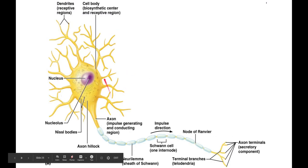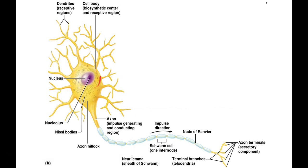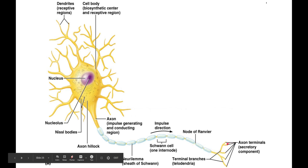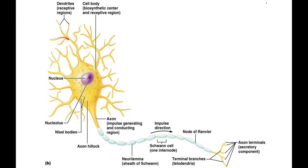Looking at the diagram: here you have the cell body — the perikaryon, also known as the soma — surrounding the nucleus. You have dendrites that branch off in a tree-like pattern. Then there's a single axon coming down from the axon hillock. At the end are the axon terminals, the secretory component, which secrete neurotransmitters. Another neuron downstream would latch onto these dendrites.